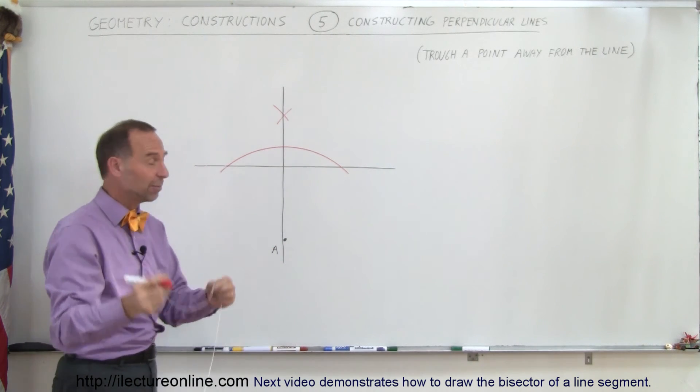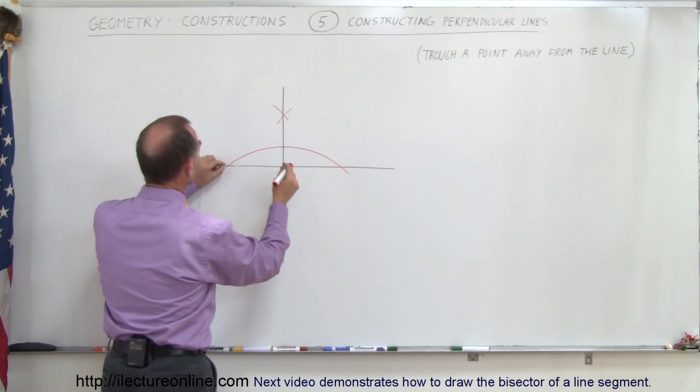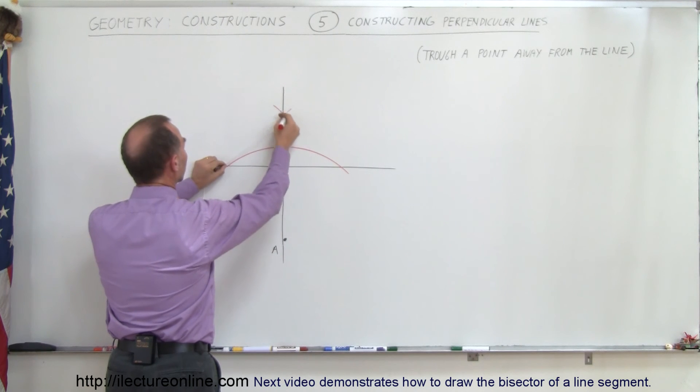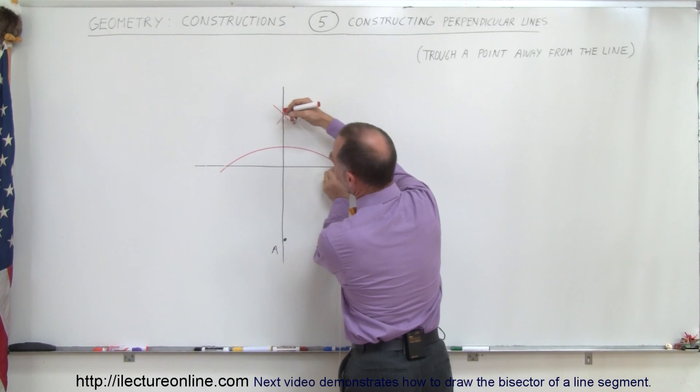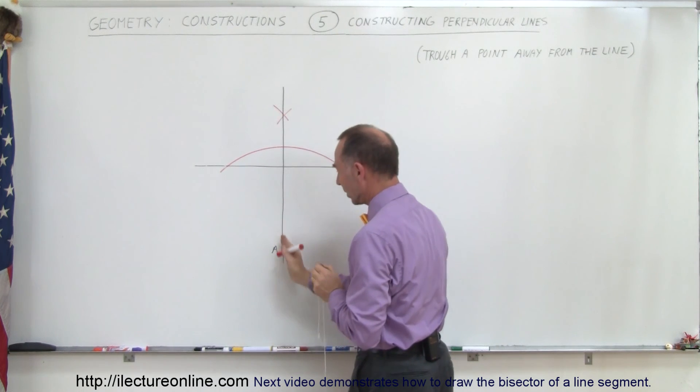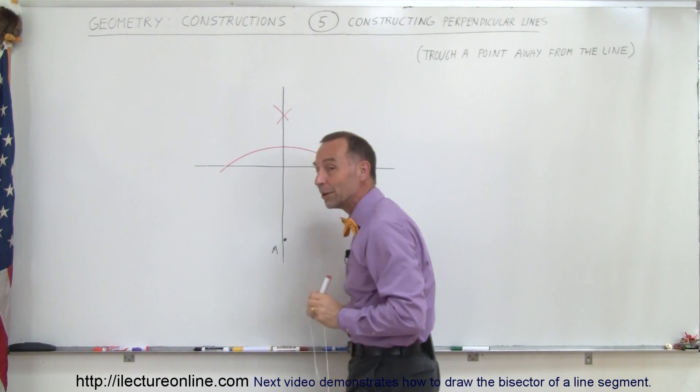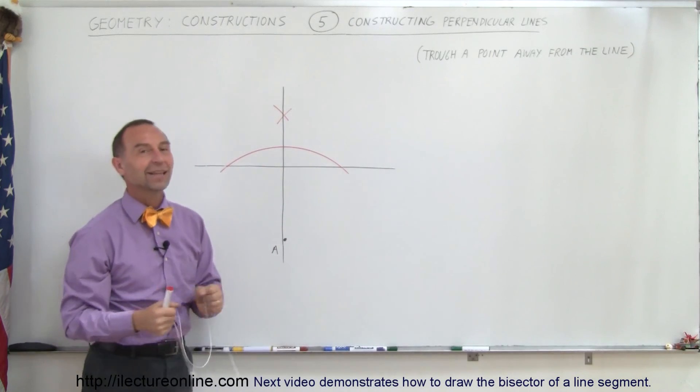Then you don't have to keep the same length, come up here and draw a little arc this way. Now keep the same length, come up here and draw a little arc this way. Where those two lines cross, draw a line through that one at this point. Those two lines will now be perpendicular to one another, and that's how we do that.